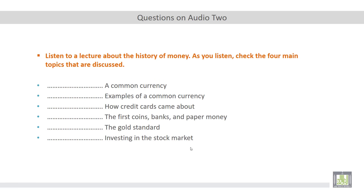Here we have six topics, but you have to check the four main topics discussed in this audio track. What was the first topic? According to the audio track, the first topic discussed was a common currency. The second topic was about examples of a common currency. The third topic was about how credit cards came about. The fourth main topic discussed in this lecture was about the gold standard.